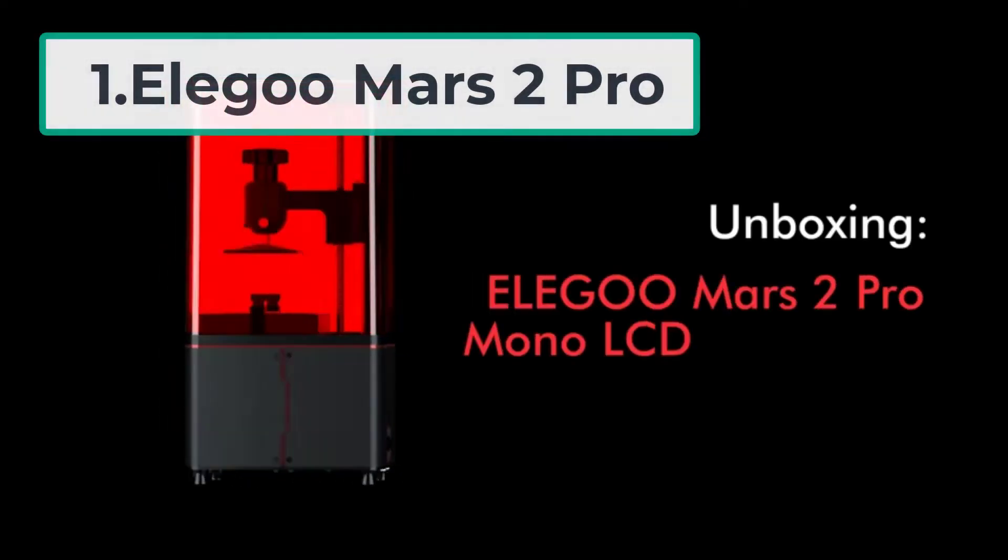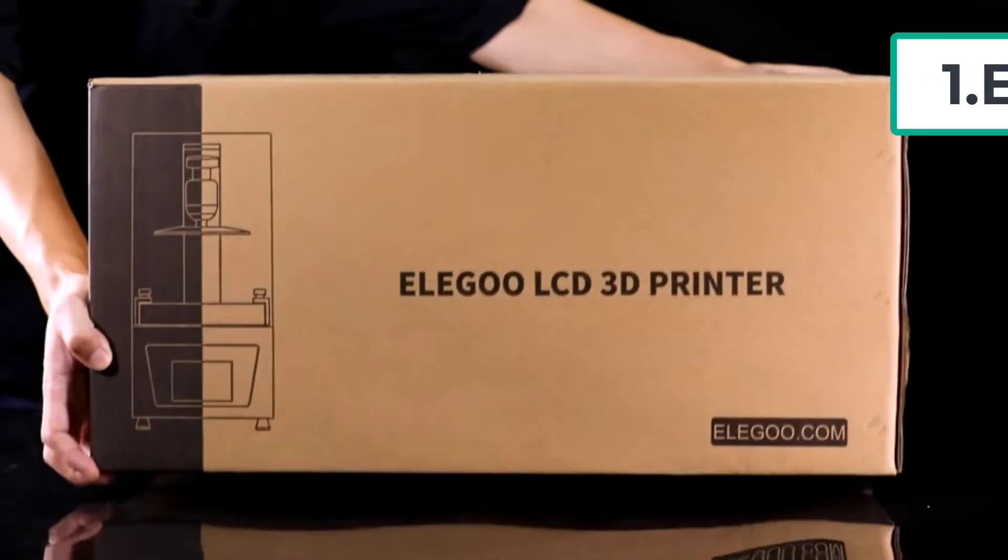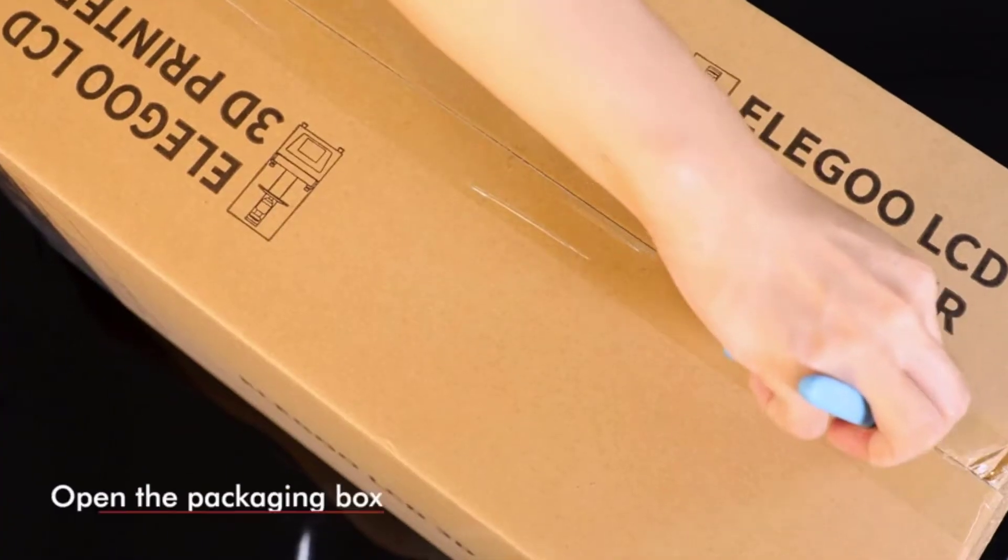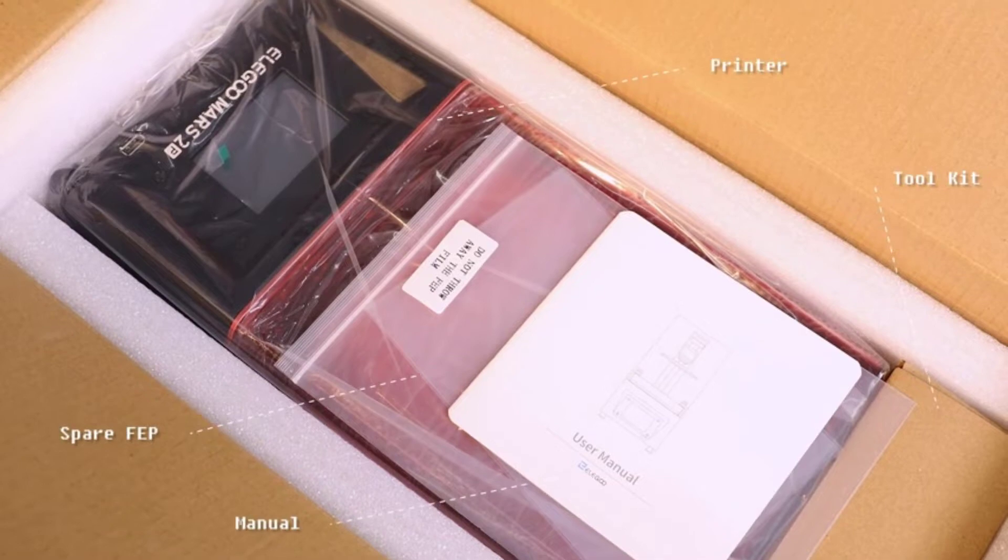Starting number 1, Elegoo Mars 2 Pro. The Elegoo Mars 2 Pro is an outstanding resin-based SLA 3D printer. It's affordable and delivers terrific print quality.